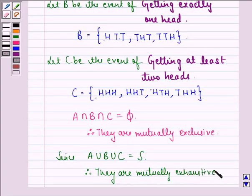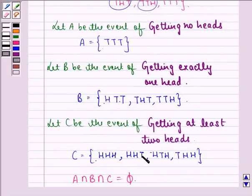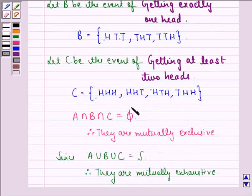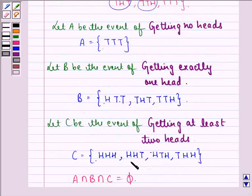So we see that whenever we have events such that their intersection is equal to phi, then they are mutually exclusive. Since we see that in 3 of the events, no element is common, therefore, this will be equal to phi and they will be mutually exclusive. We also see that A union B union C.